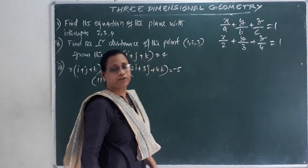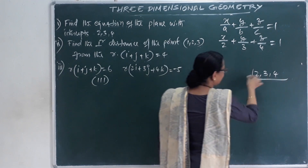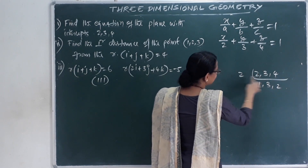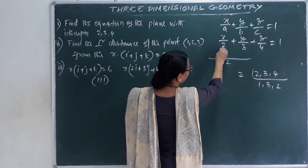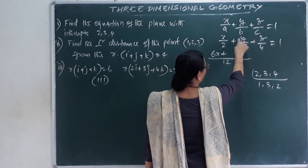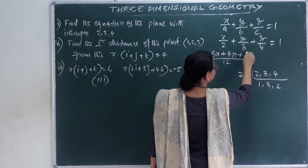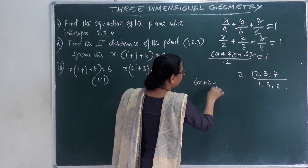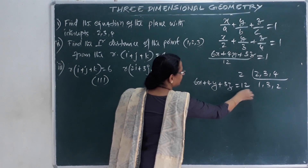Now the equation with intercepts 2, 3, 4. Take LCM, which is 12. So 12/2 is 6, giving 6x; 12/3 is 4, giving 4y; 12/4 is 3, giving 3z. That is equal to 12. So 6x + 4y + 3z = 12. This is the answer.